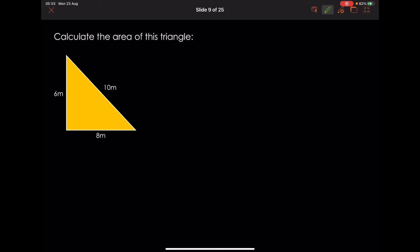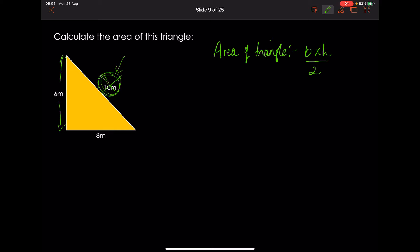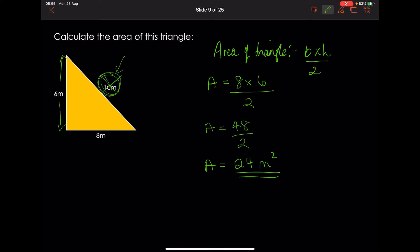Work out the area of this triangle — you should be able to do this easily now. Area of a triangle is base times height over two. Note: sometimes they'll give you the slanted side to trick you, but you don't need it for area — that value is for Pythagoras or trigonometry. So area equals 8 times 6 divided by 2. Six eights are 48, divided by 2 gives 24 metres squared.